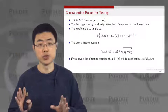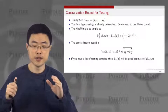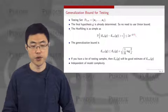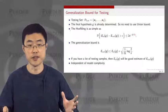As L goes to infinity, the testing error E_in approaches the true population error E_out. This is intuitive: with many testing samples, the empirical testing error converges to the true population error. This bound is also independent of model complexity because it does not depend on how you chose the hypothesis — only on delta and L.